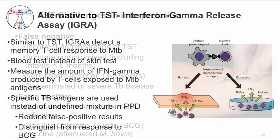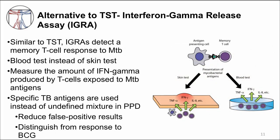Because of these challenges, a new diagnostic test has been developed — it is called an interferon gamma release assay, or IGRA. Similar to TST, IGRAs detect a memory MTB-specific T cell response. In this case, it is a blood test instead of a skin test, and it measures the actual amount of one of the pro-inflammatory cytokines — interferon gamma — instead of measuring the induration caused by all of the pro-inflammatory cytokines. The TB antigens used to elicit the memory T cell response in the IGRA are very specific, not the undefined mixture contained in PPD. These specific TB antigens were chosen to reduce the false positive TST results from BCG vaccine and from environmental non-tuberculosis mycobacteria.